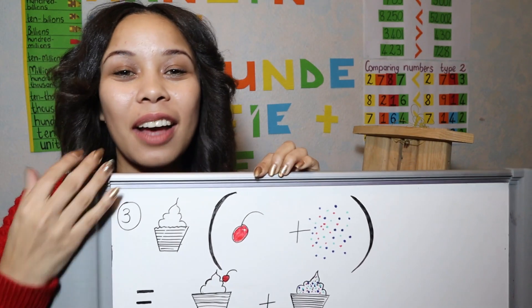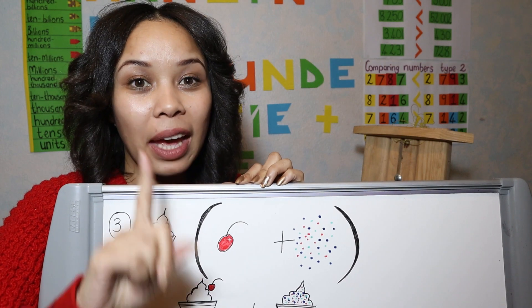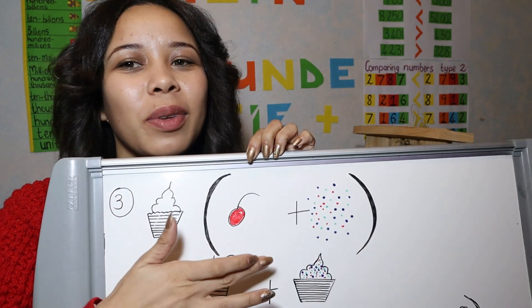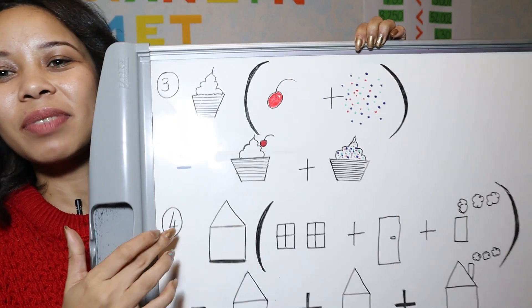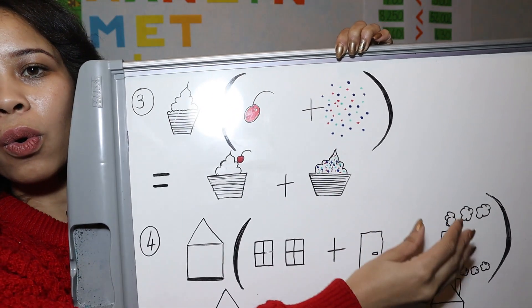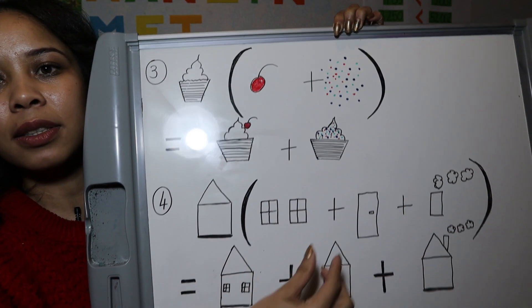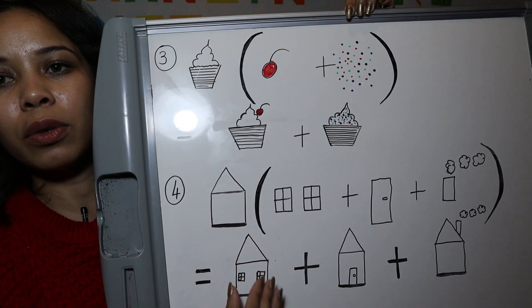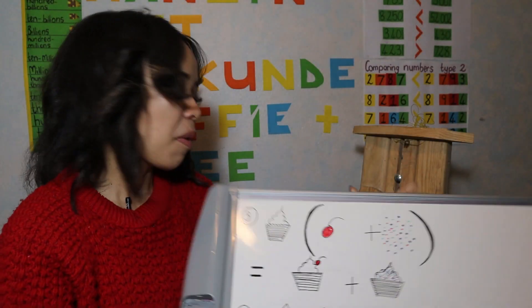Here I have a cupcake and the toppings I can put on are a cherry or some sprinkles — remember, you can only have one topping at a time. So I have a cupcake with a cherry and one with sprinkles. Then I have a house — the options are windows, a door, or a little chimney. Make sure it's a plus sign, and then my answers are the house with windows, the house with the door, and the house with the chimney.